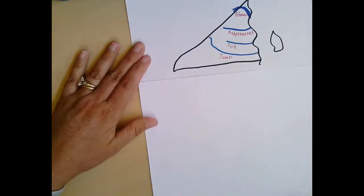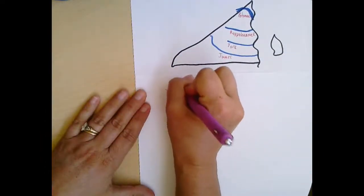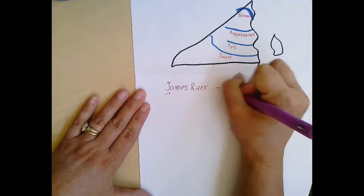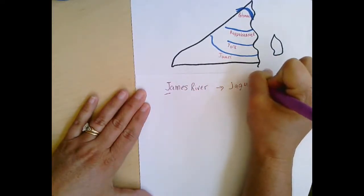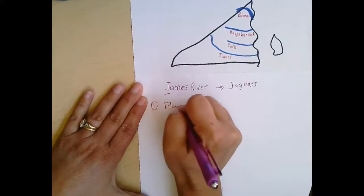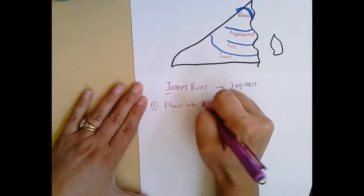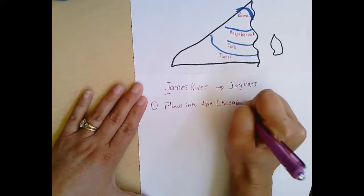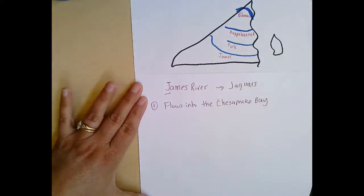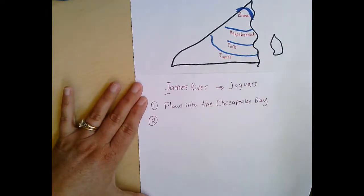Our last river to discuss is the James River — the J in James stands for Jaguars, which is a very expensive car. Again, the very first thing to remember about each river is that it flows into the Chesapeake Bay, flowing downhill — all rivers flow downhill, they cannot flow uphill. The James River is the only river that contains two major cities that we have to remember.